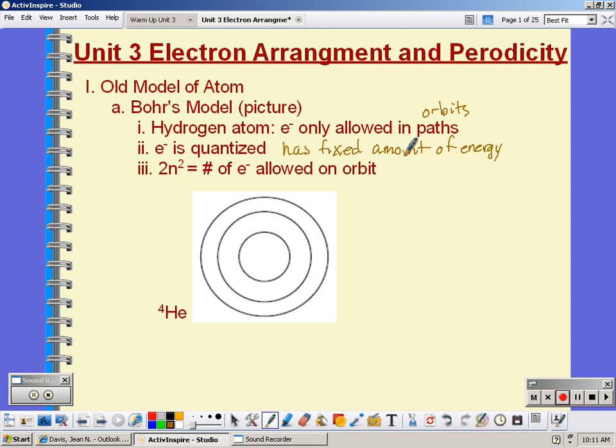So when the electron is on the first energy level it has a certain amount of energy. When it moves to the second energy level it would have more energy.